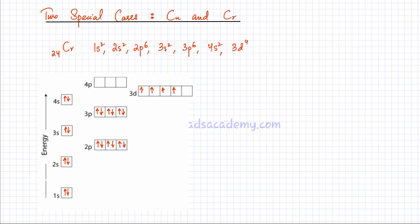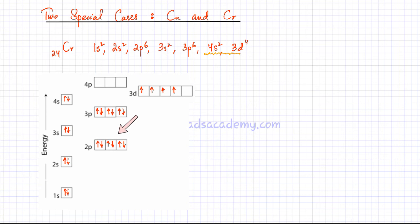Now if you look at this electronic configuration, the 4s and the 3d — the 4s has 2 electrons and the 3d has 4 electrons. I have drawn the electronic configuration using the box diagram: 1s is full, 2s is full, 2p is full, 3s is full, 3p is full, and the 4s has 2 electrons and the 3d has 4 electrons.